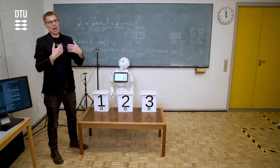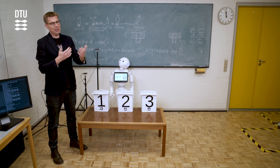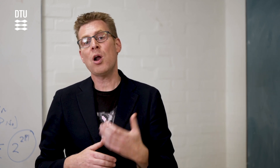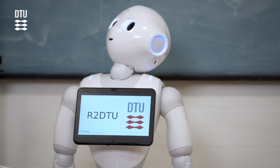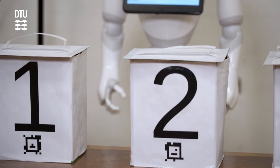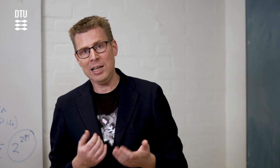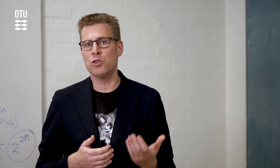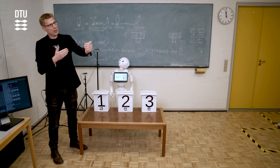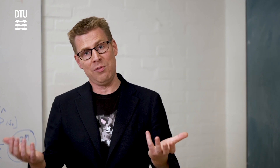So actually, it manages to pass the test, showing that it can both represent the real state of affairs — that the cube is in box two — but also the fact that Lasse has a false belief, namely that it is still in box one where he originally put it. So now we can invite Lasse back into the room in order to show how the robot can use its ability to take the perspective of Lasse in order to be helpful when Lasse wants to solve a given task.